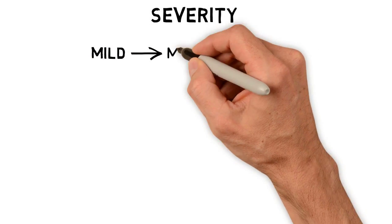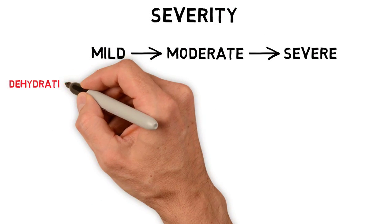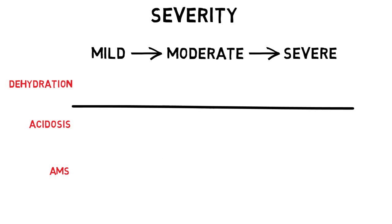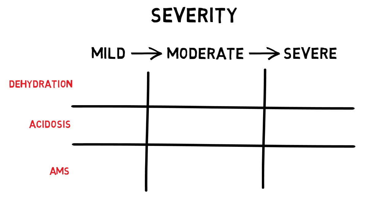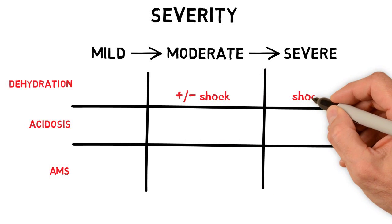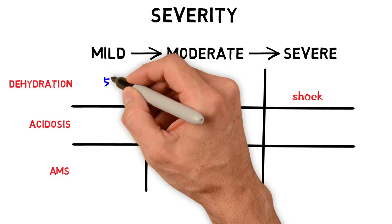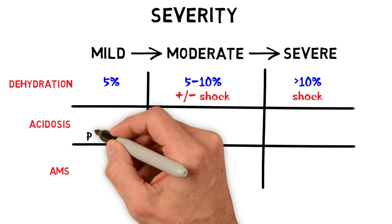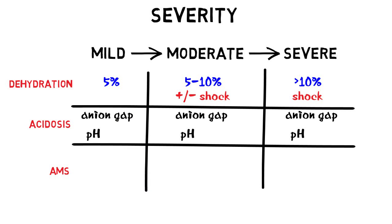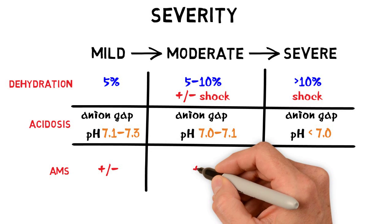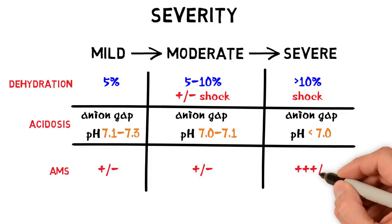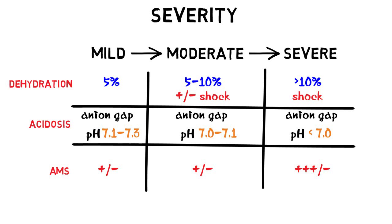DKA ranges from mild to severe based on the severity of dehydration, metabolic acidosis, and altered mental status. Dehydration is estimated via signs and symptoms of shock like tachycardia and hypotension, and you should always presume a volume deficit of 5–10%. The pH and anion gap are measures of acidosis, with mild pHs ranging from 7.1 to 7.3, moderate from 7.0 to 7.1, and severe pH less than 7.0. Altered mental status may be present in DKA of any severity but is more typically a sign of severe DKA. A prompt initial assessment for severity is critical, including evaluation for shock and altered mental status.